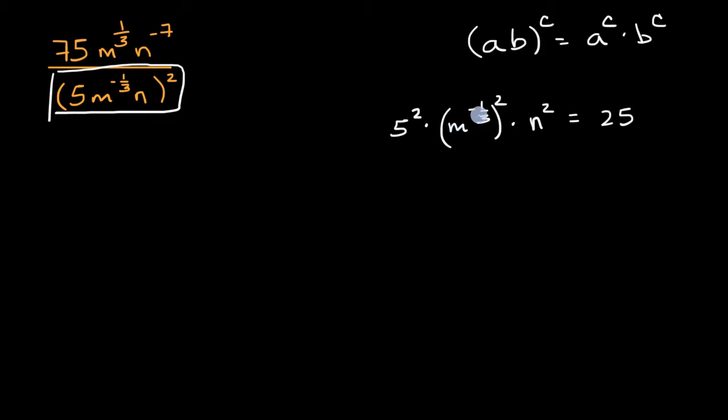Now if I raise something to an exponent and then raise that to an exponent, there's another exponent property here. If I have a to the b and then I raise that to the c, then I multiply the exponents. This is equal to a to the b times c power. So here we would multiply these exponents. So it's 25m, two times negative 1 3rd is negative 2 3rds. And then of course we have this n squared right over here.